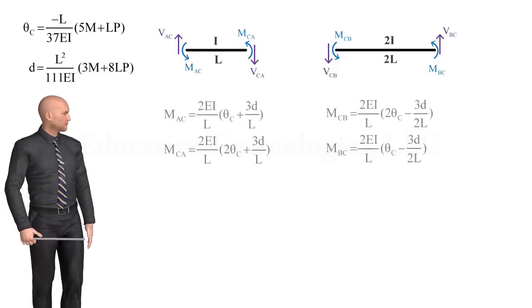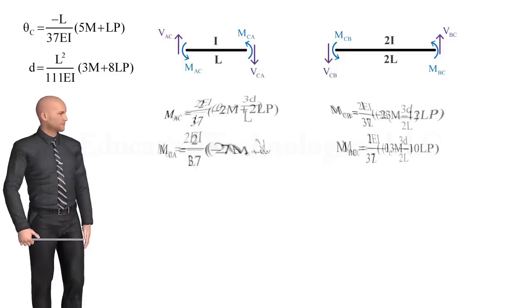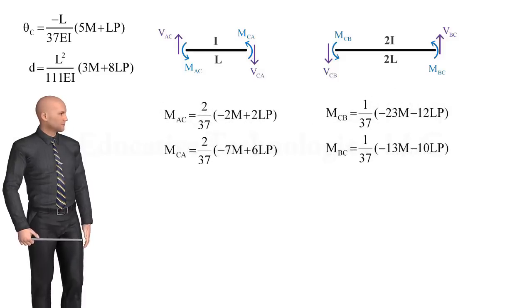Substituting theta C and D back into the slope-deflection equations, we can determine the member-end moments in terms of the load magnitude, M and P.